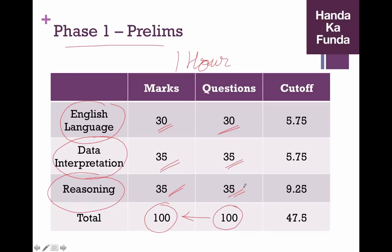Please keep in mind to get a call for the mains, you not only need to clear the overall cutoff but the sectional cutoff as well. The sectional cutoff last year was 5.75 for English and DI. As you can see, 5.75 out of 30 and 35 is not that difficult. For reasoning, it was a little bit higher at 9.25, quite significantly higher than 5.75.